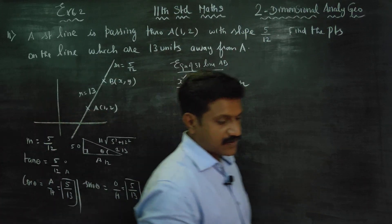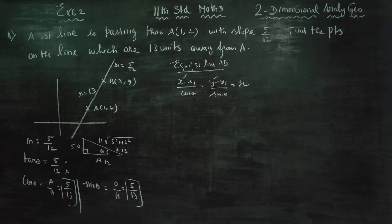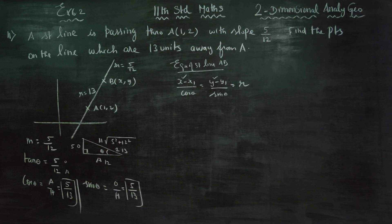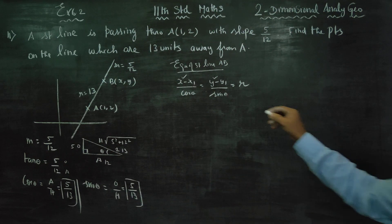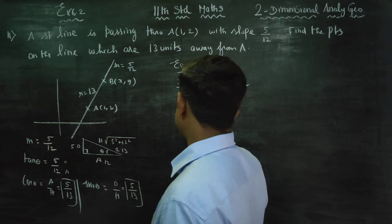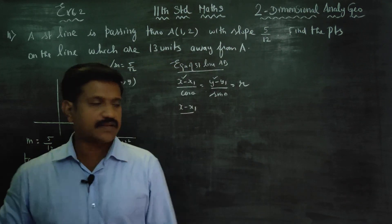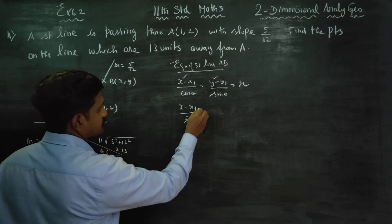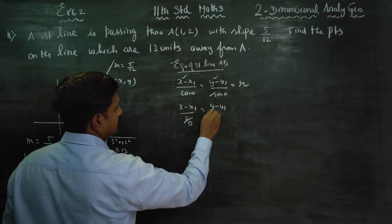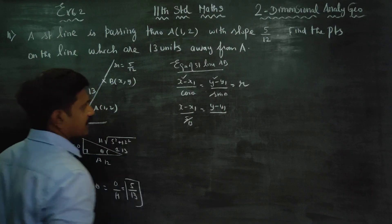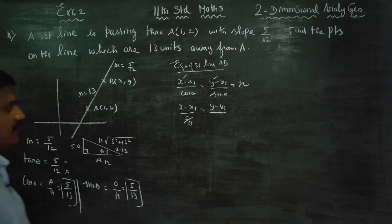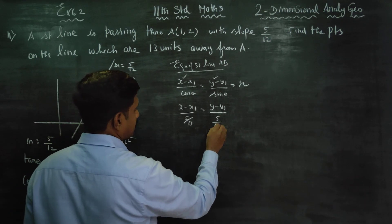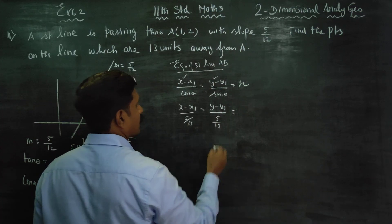After finding the values of cos theta and sin theta, we substitute them into the equation. x minus x1 by cos theta — which is 12 by 13 — is equal to y minus y1 by sin theta — which is 5 by 13 — is equal to R.